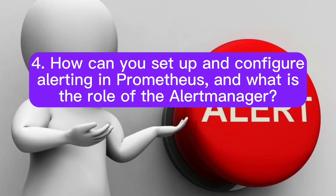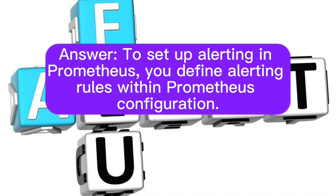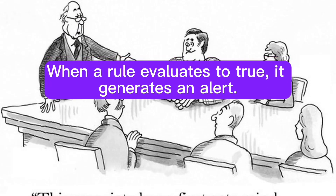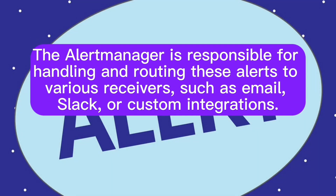How can you set up and configure alerting in Prometheus, and what is the role of the alert manager? To set up alerting in Prometheus, you define alerting rules within the Prometheus configuration. When a rule evaluates to true, it generates an alert. The alert manager is responsible for handling and routing these alerts to various receivers, such as email, Slack, or custom integrations.